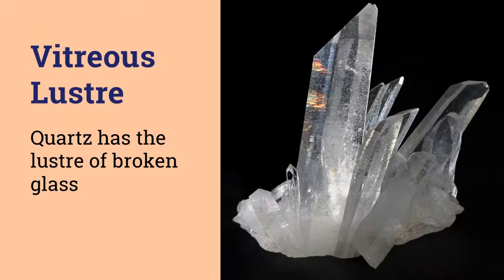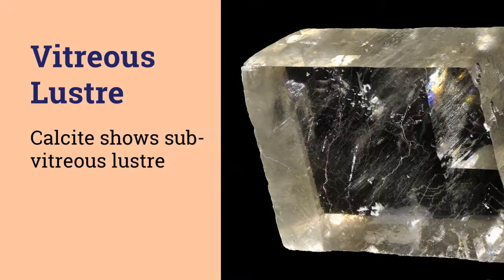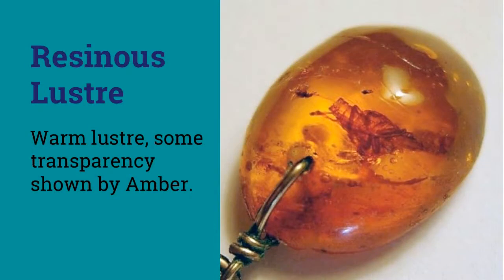Next comes the vitreous lustre, which is the lustre of a broken glass. Quartz has this vitreous lustre and calcite has subvitreous lustre. There is also a resinous lustre which looks like the lustre of a resin. Opal has this lustre and so does amber. Resinous lustre is generally shown by those minerals which are of warm color and have some transparency.